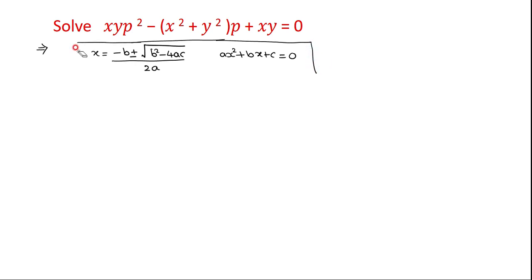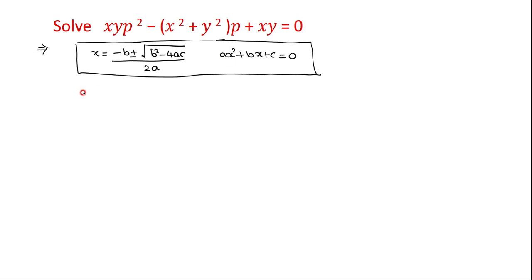We will find the values of P. Comparing with the standard form, we see that A is XY, B is minus of X squared plus Y squared, and C is XY.